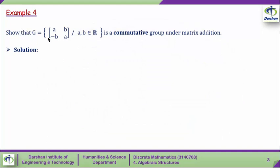For Example 4, let G be the set of 2×2 matrices with entries of the form [a, b; -b, a] where a and b are from R. We want to show G is a commutative group under matrix addition. The elements of G are 2×2 matrices with entries a, b, -b, a where a, b are from the real numbers.